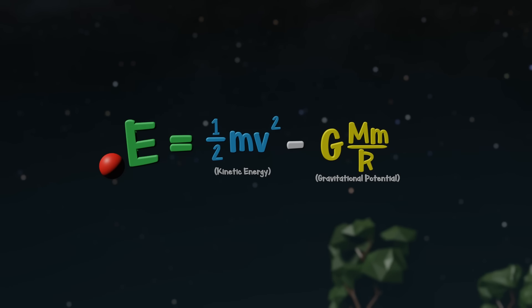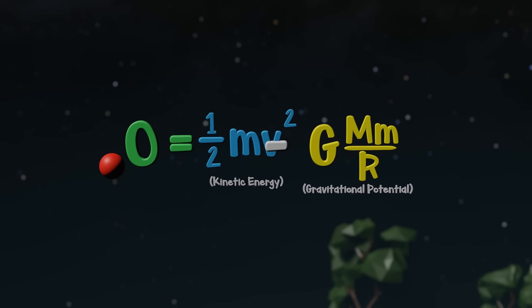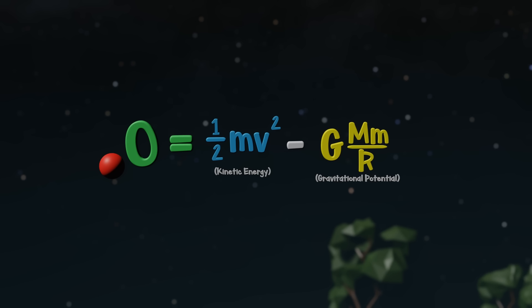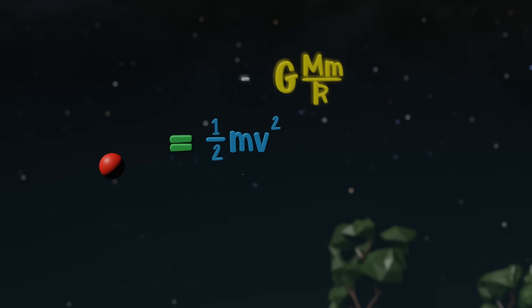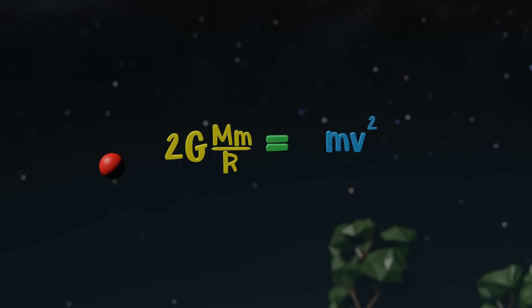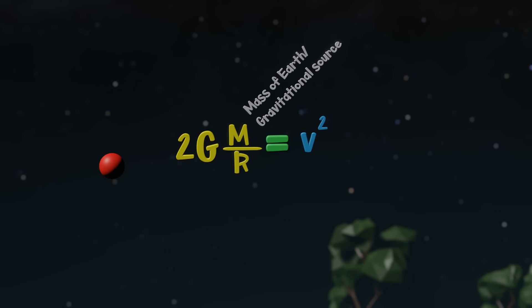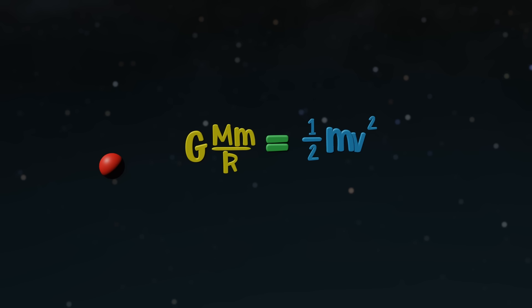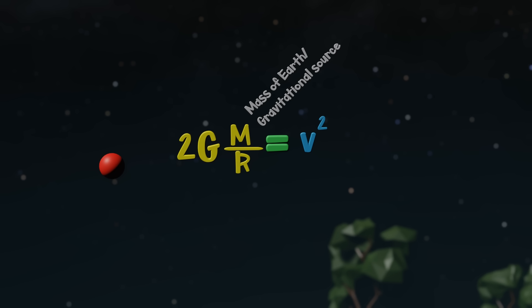If we set E to zero, then these two forces cancel out and our ball will never fall back to Earth. If we solve for velocity, we can then find out how fast our ball must be moving in order to escape Earth's gravity. Because the mass of our object is in both components, it cancels out, so this speed is equivalent for all objects of all sizes and masses.